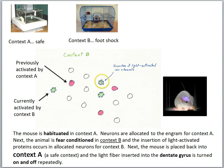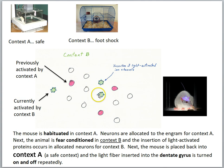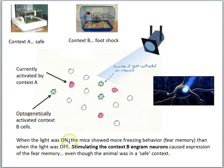In context B, the cells express the opsin proteins and become light-activated — these context B cells can now be controlled using light. Next, the mouse is placed back into context A, the safe context, with the light fiber inserted into the dentate gyrus. The light is turned on and off repeatedly to observe whether the animal's behavior changes. When the light is off, the context A cells are active, representing a memory of a safe place. When the light is on, the context B cells are also activated — and those B cells were involved in the engram for the fear memory.